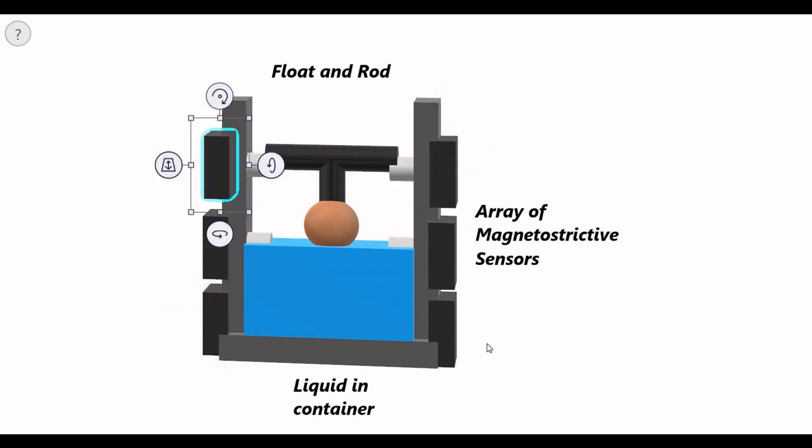So this is the whole mechanism and operating principle of level measurement using magnetostrictive sensors. I hope you liked this video — please subscribe to my channel, Engineering Tutorial, for more videos related to engineering, science, and technology. Have a great day, thank you very much.